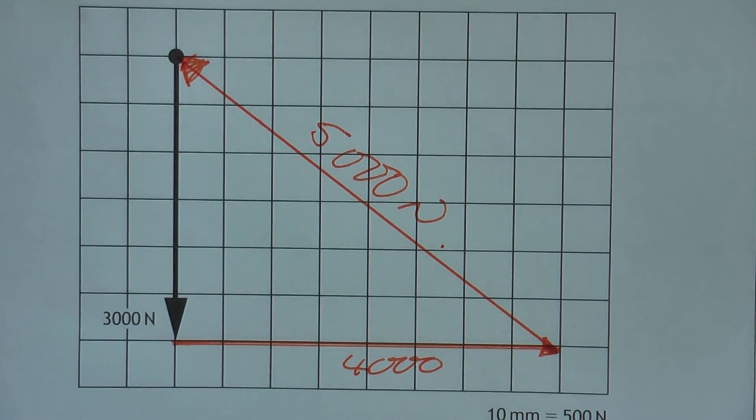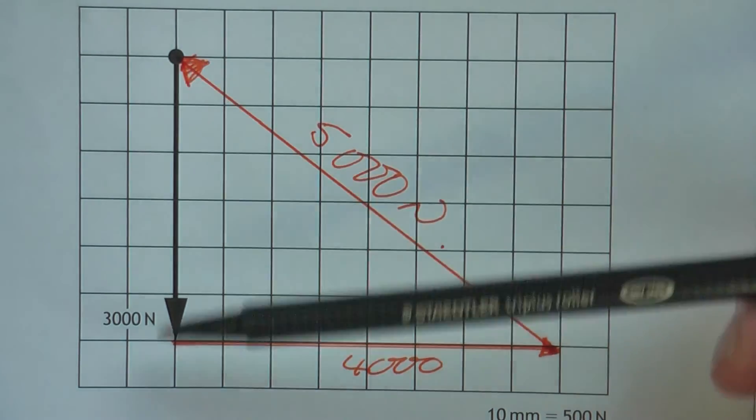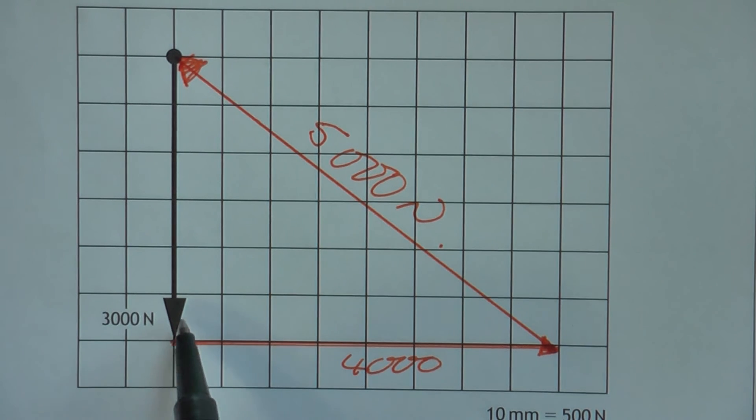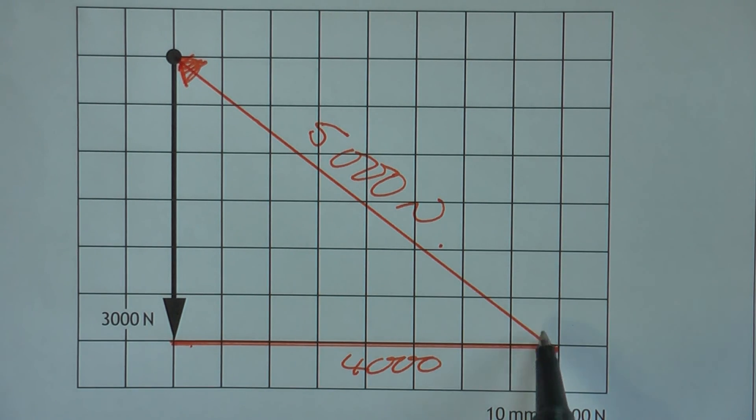Okay? So there's three forces. You just draw out the ones you know, and then close the gap. Okay? The arrows go head to tail. Head to tail. Thank you.